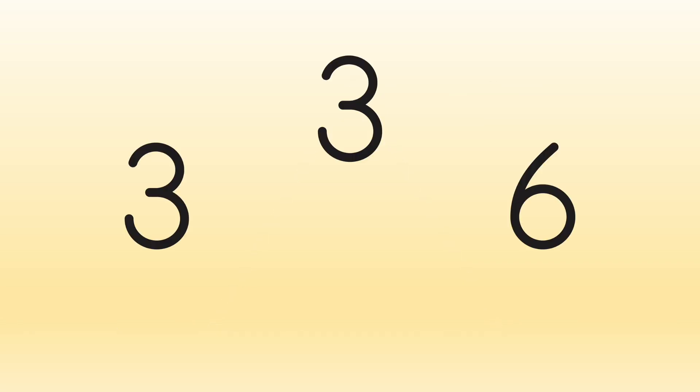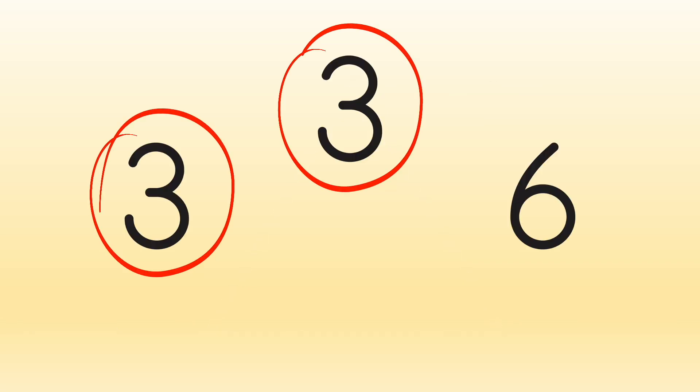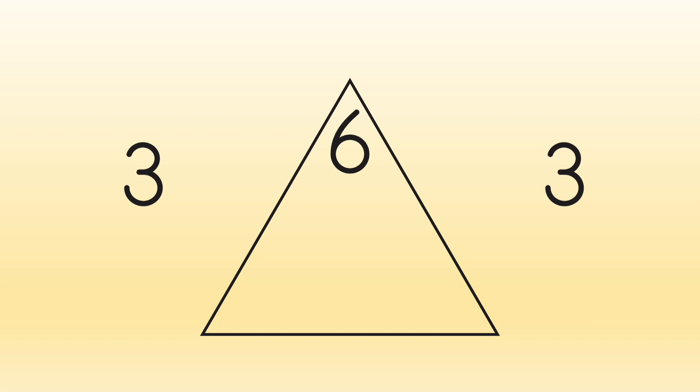Let's use the numbers 3, 3, and 6. These three numbers are an example of a fact family. So 6 goes to the top, and both 3's go to the bottom.